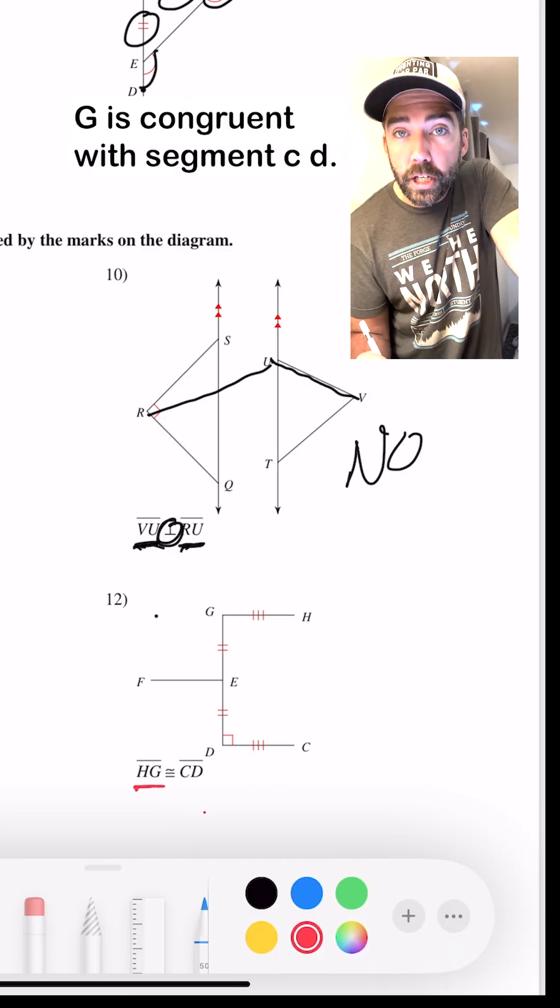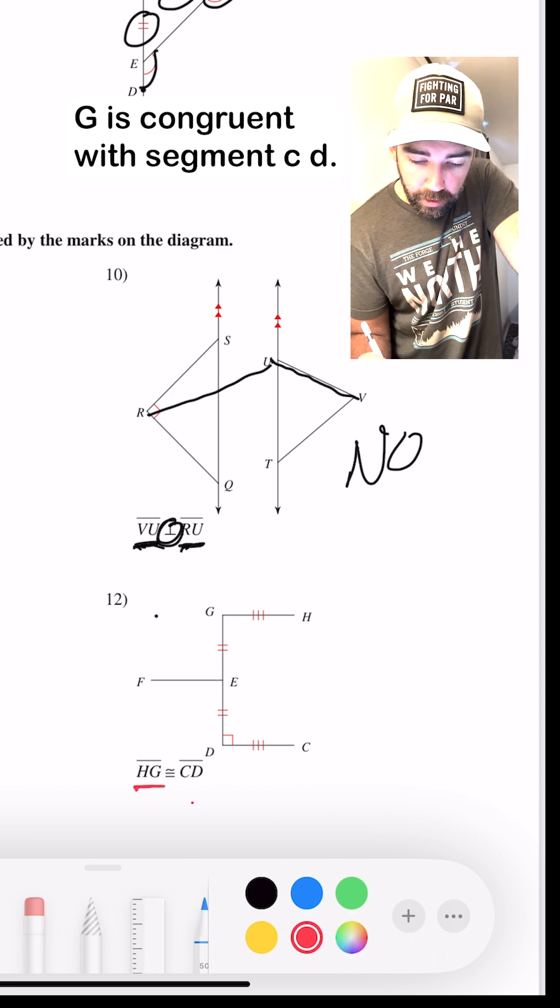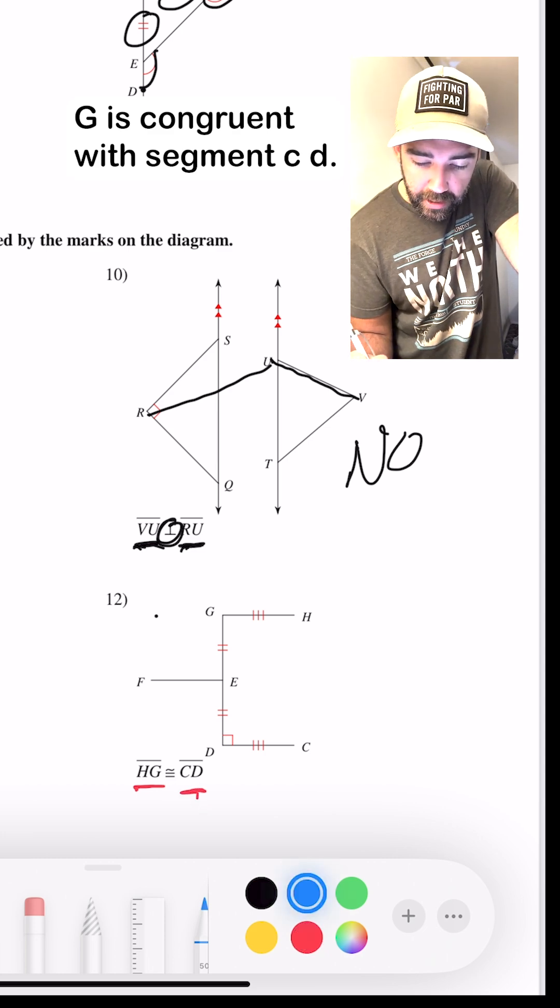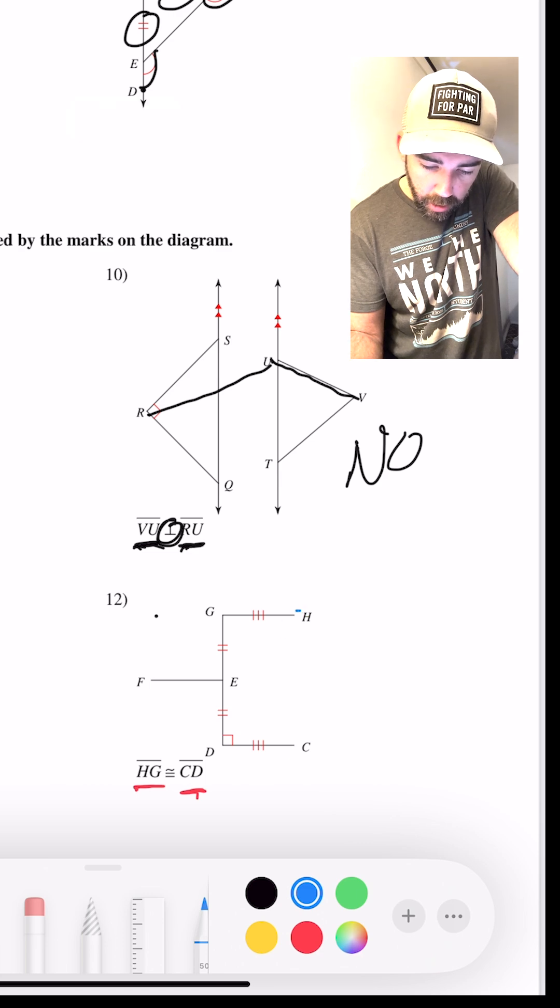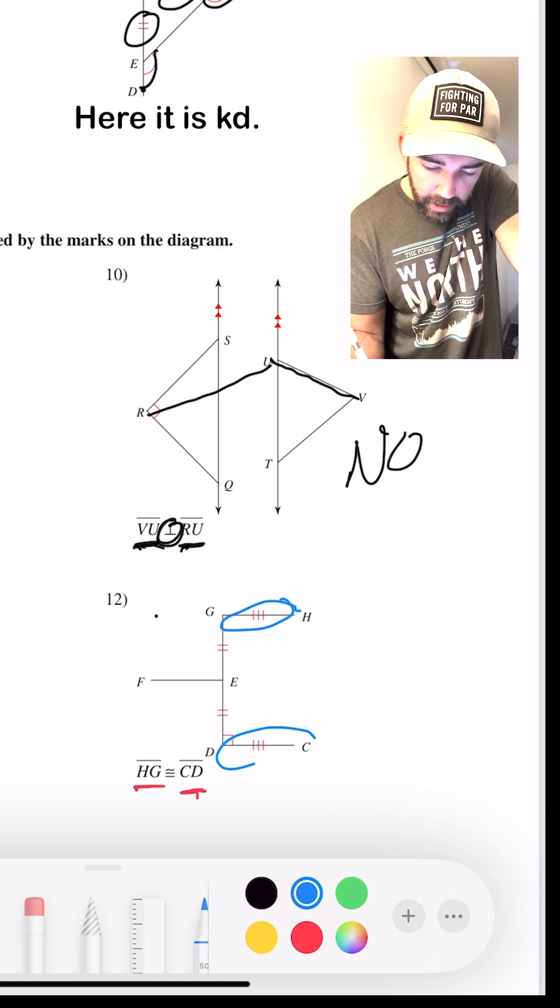How about segment HG is congruent with segment CD. So HG, here it is. CD, here it is.